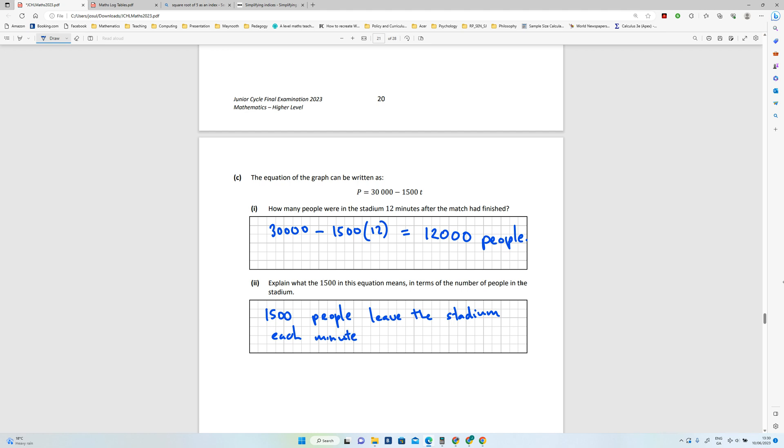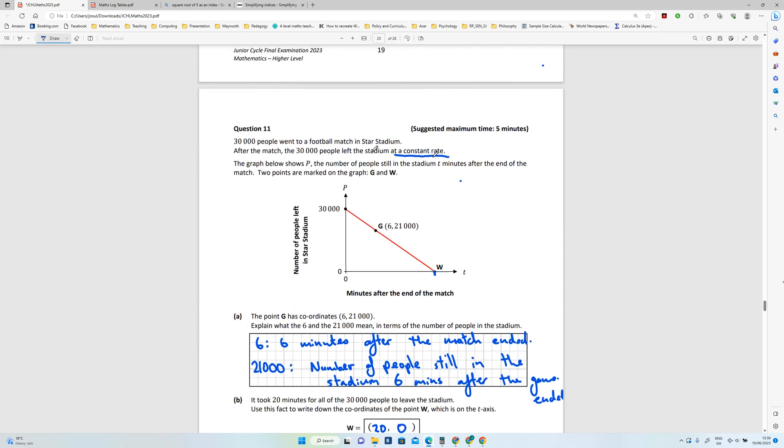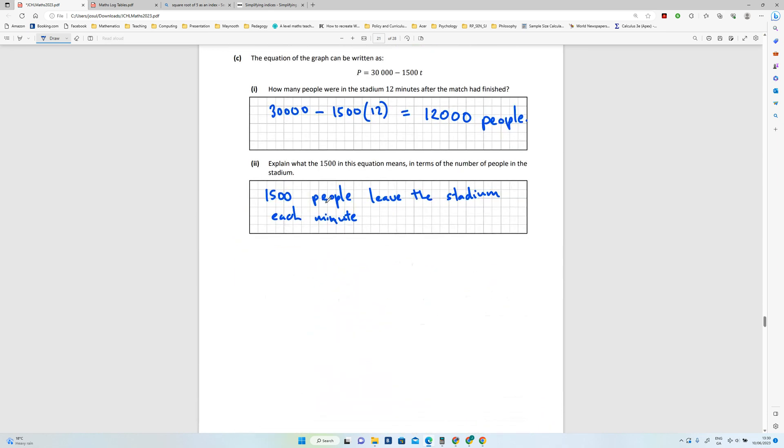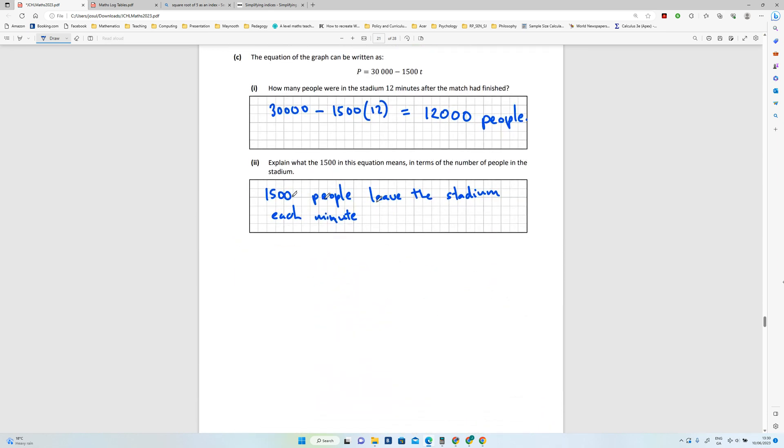So it's the drain rate, or the exit rate if you like. And we were told at the start of the question that it was a constant rate. So the constant rate is actually 1,500 people per minute.